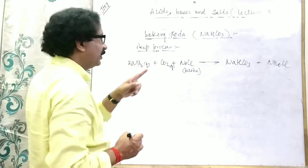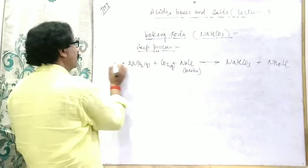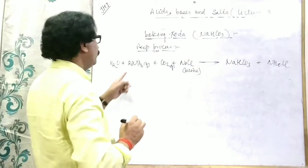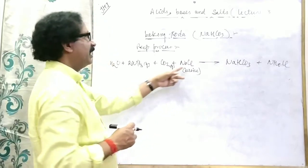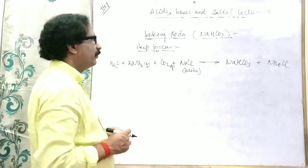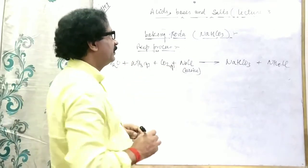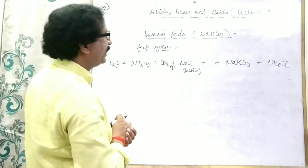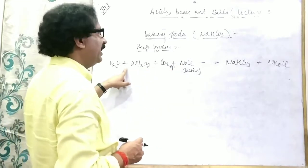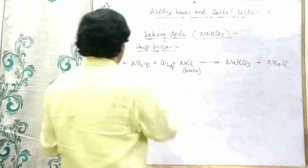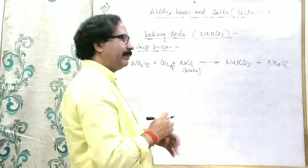One more thing: ammonia, carbon dioxide, NaCl, and water are also necessary here. Without water it will not form — NaCl, CO₂, ammonia, as well as water are all required, and later we have to balance. Note down the product: baking soda, and the by-product is ammonium chloride — NaCl. Balancing: Na, Cl, CO₃, CO₂ — that is already balanced.